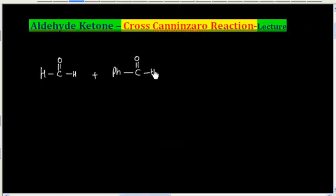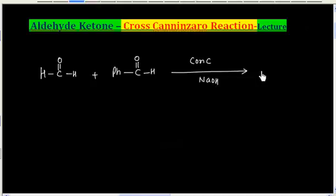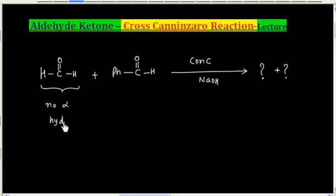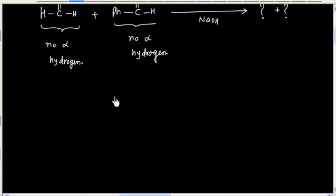Let us consider this reaction. If a mixture of formaldehyde and benzaldehyde is treated with concentrated NaOH, what will be the product? This is a Cannizzaro reaction because this aldehyde has no alpha-hydrogen and this also has no alpha-hydrogen. So we will have a Cannizzaro reaction.